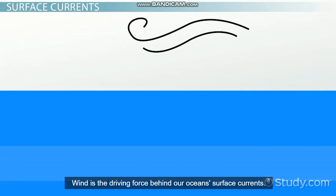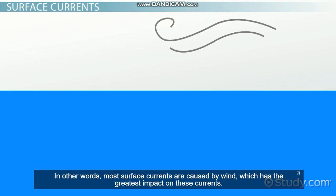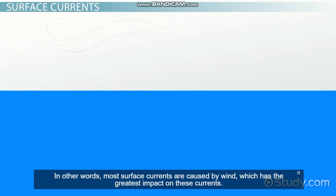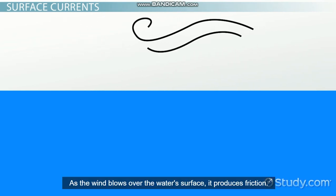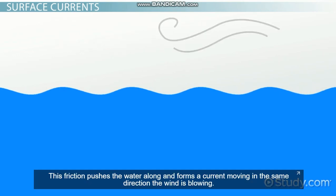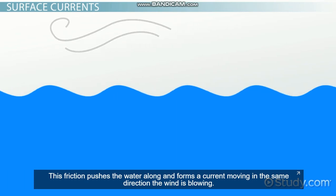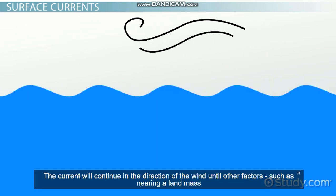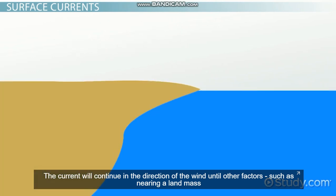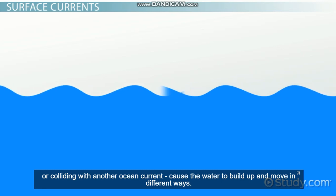Wind. Wind is the driving force behind our ocean's surface currents. In other words, most surface currents are caused by wind, which has the greatest impact on these currents. As the wind blows over the water's surface, it produces friction. This friction pushes the water along and forms a current, moving in the same direction the wind is blowing. The current will continue in the direction of the wind until other factors, such as nearing a landmass or colliding with another ocean current, cause the water to build up and move in different ways.